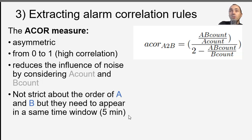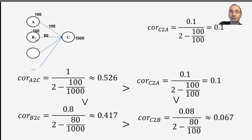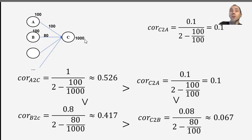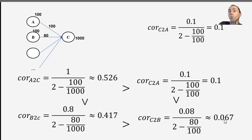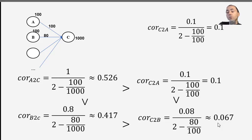For example, consider alarms A, B, and C on connected nodes: A appears 100 times, B 100 times, A and C together 100 times, B and C together 80 times, and C appears 1,000 times. Calculating ACOR: 'B implies C' gives 0.4, while 'C implies B' gives 0.06 — so the rule B→C has much higher correlation than C→B. This asymmetry is exactly what we wanted.